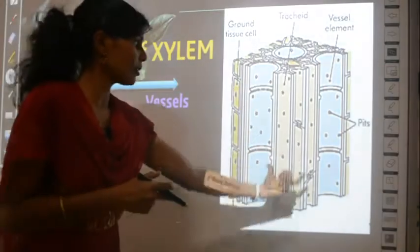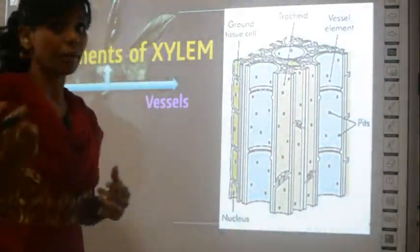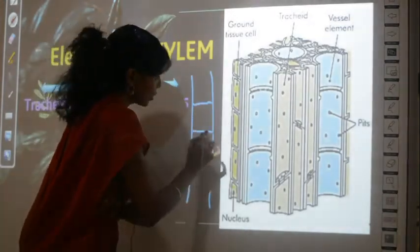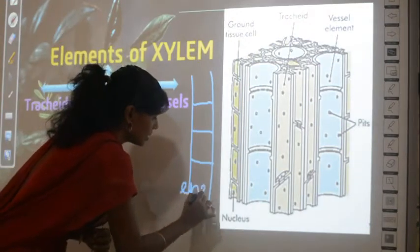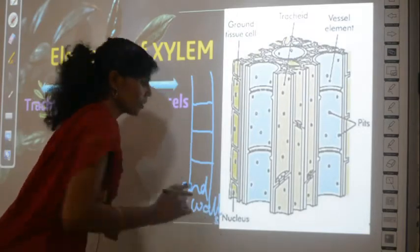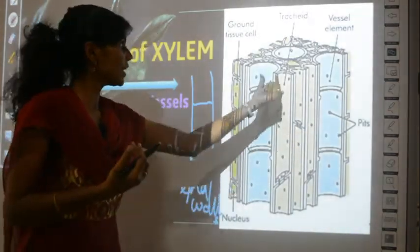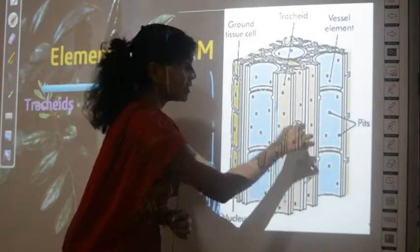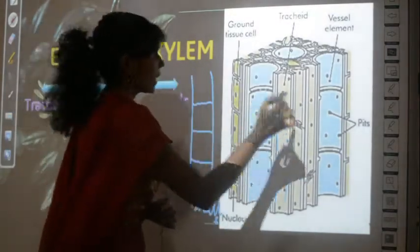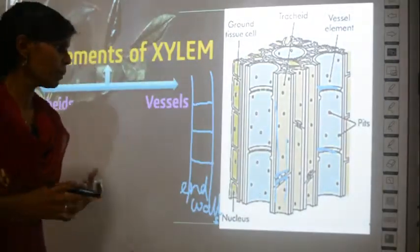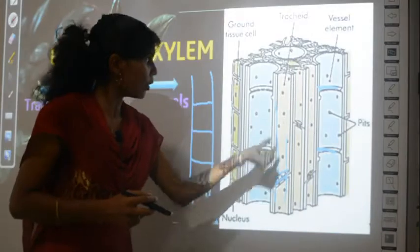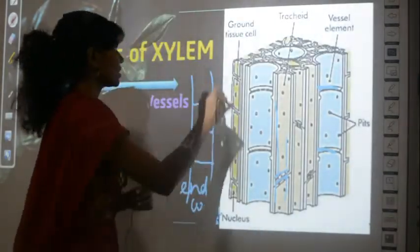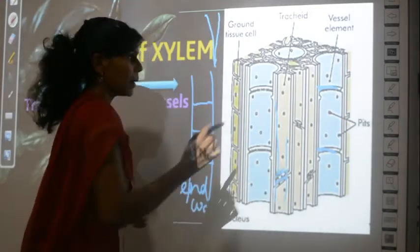To differentiate tracheids from vessels, you need to know the term 'end walls' — the divisions or partitions inside the tube-like structure. Both tracheids and vessels have end walls, but the shape differs. In tracheids, the end walls are tapered — tapering means narrowed at some point. In vessels, the end walls are not tapering — the vessel elements are connected end to end with straight partitions.